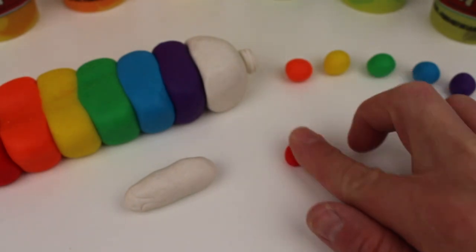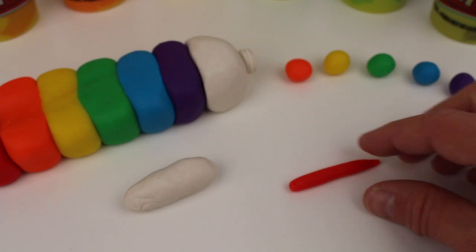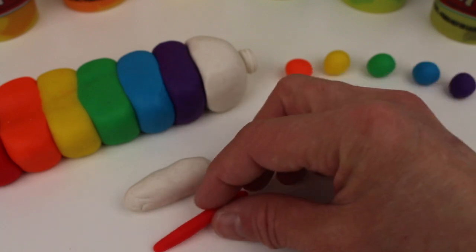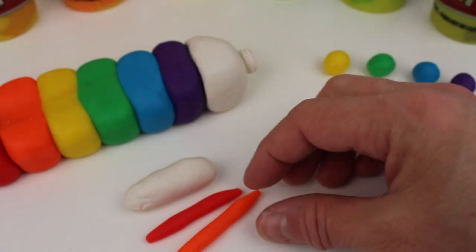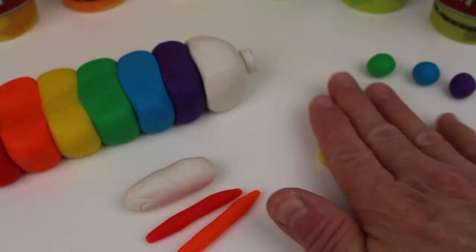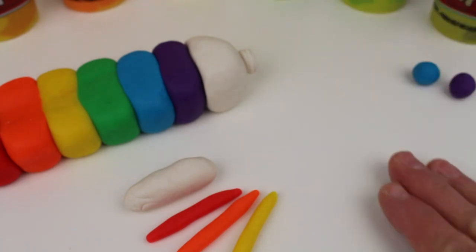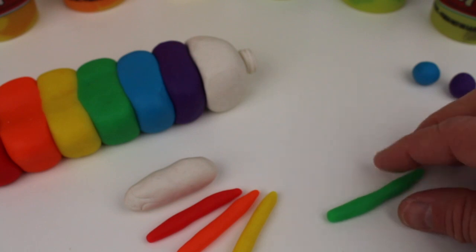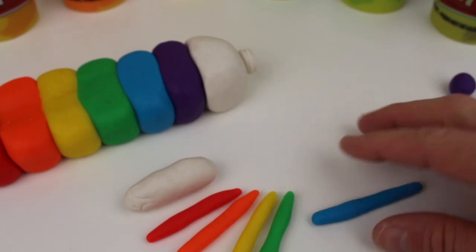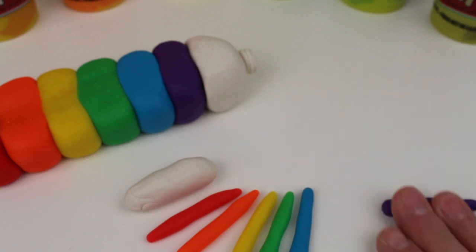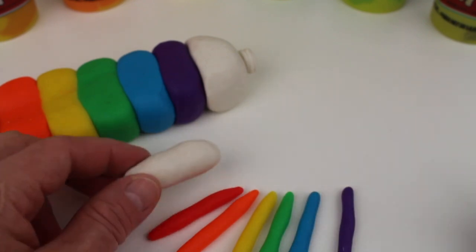We have red play-doh, and we need to roll it out to make rainbow play-doh toothpaste. Orange, yellow, green, blue, and purple. Now add it to the white play-doh.